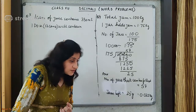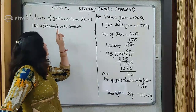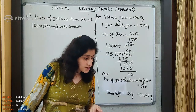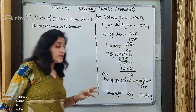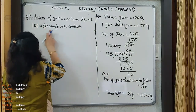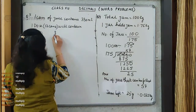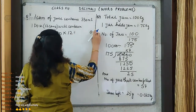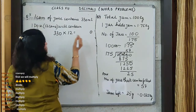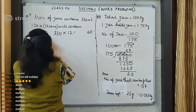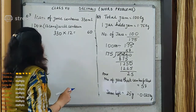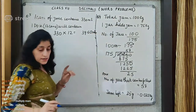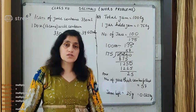When it is given for one and we have to find for many, it is always multiplied. So this will be 330 multiplied by 12. 12 zeros are 0; 12 threes are 36, carry 3; 12 threes are 36 plus 3 is 39. So the answer is 3,960 milliliter. But in the question it is asked how many liters of juice — so now we have to convert this into liter.